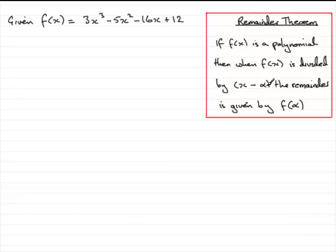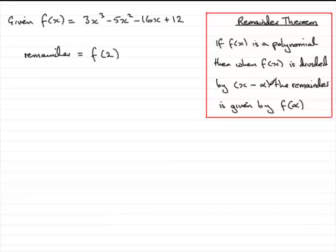So all we need to do is say that the remainder equals f of 2. It's as if you put the bracket equal to zero and work out what your value of x would be. In this case, if it's x minus 2 and you put it equal to zero, then x equals 2 — that's your alpha value. So we simply substitute 2 into the polynomial to get the remainder.